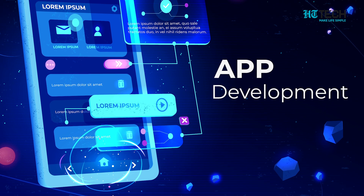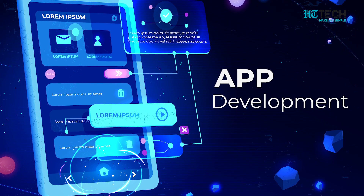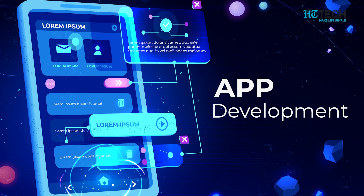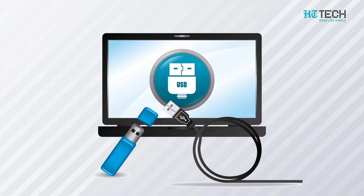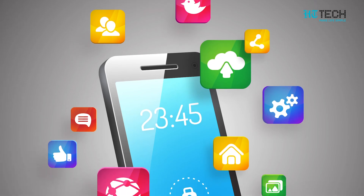Enable developer options. There's a hidden set of developer options on Android devices that you can access if you know how. Whether you want to enable USB debugging, check the running status of background apps, or change the animation draw speed to give your phone a sleeker feel — this is where you can do that and a lot more.